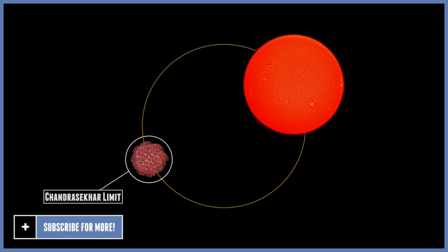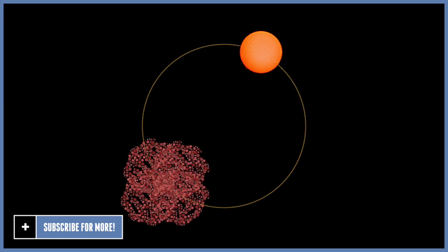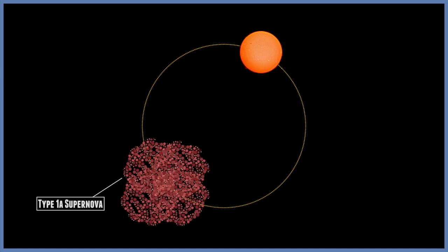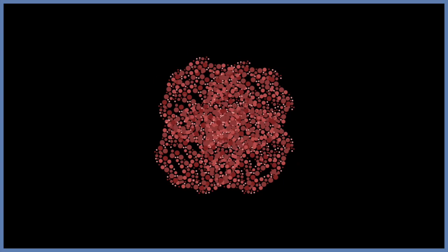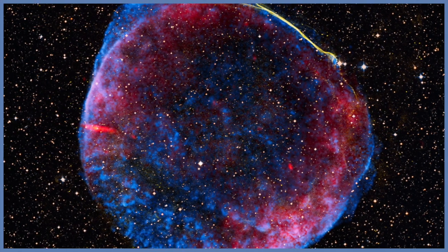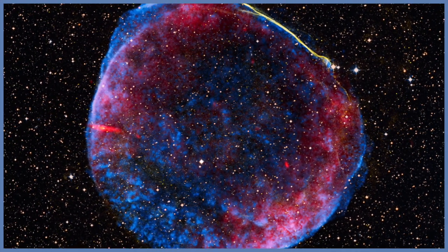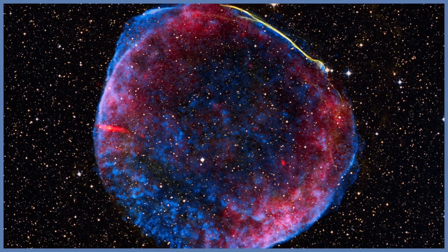At this point the white dwarf is too massive to be stable, and therefore it explodes in a violent supernova. This is what's known as a type 1a supernova. This always occurs at this critical mass. This critical mass is about 1.4 times the mass of our Sun, and therefore the brightness of the supernova is very predictable.